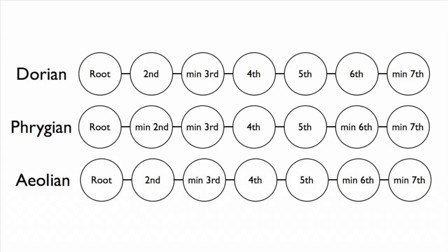If we compare these three popular minor modes, we find some similarities. Within the alphabets of Dorian, Phrygian, and Aeolian, we find five common notes. These are seven-note scales, and five of them are the same. So if you learn a condensed version of the alphabet — just these five common ones — you'll be able to express yourself over a Dorian, Phrygian, or Aeolian backing track just by using these five letters.